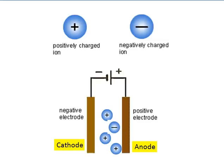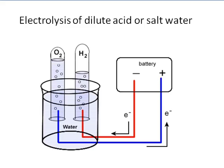There are two electrolysis setups that you need to know about. The first one is the electrolysis of dilute acid or of salt water. In both cases, you liberate oxygen and hydrogen gas. So it is a way of making pure oxygen and pure hydrogen gas.